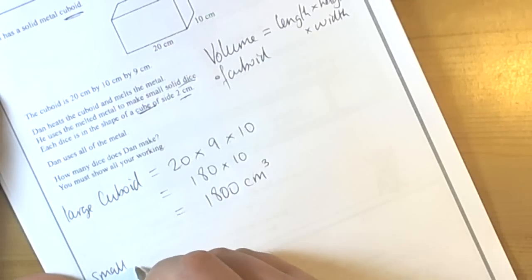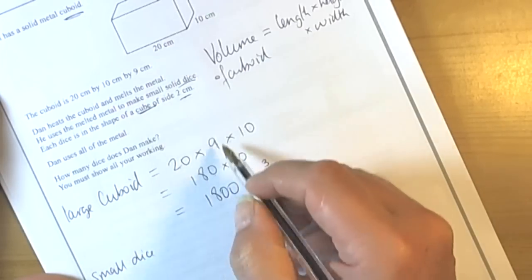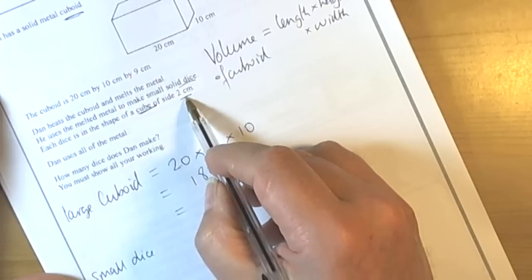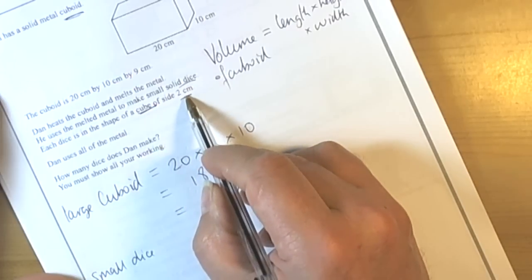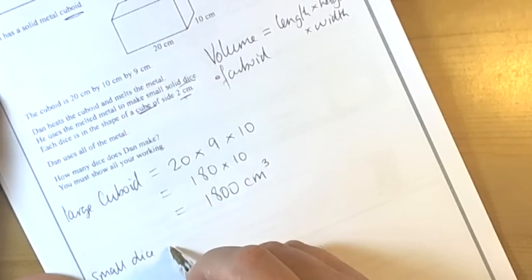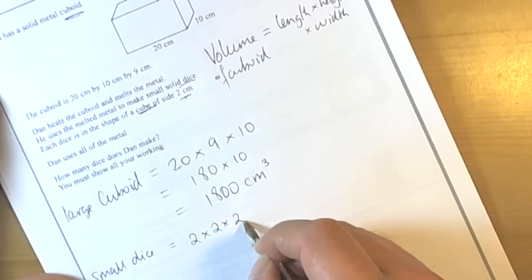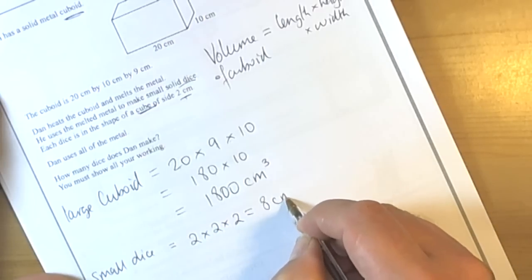The small cuboid, so the small dice, they've been told they had a width of 2 cm. So because it's a cube, then the volume of a cube is literally multiplying each dimension by itself, so we're going to do 2 times 2 times 2, and that gives us 8 cm³.